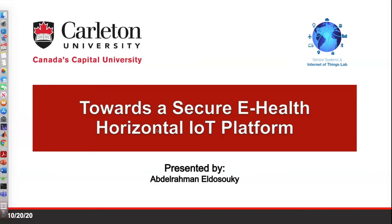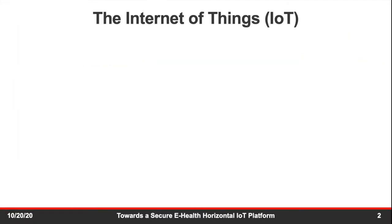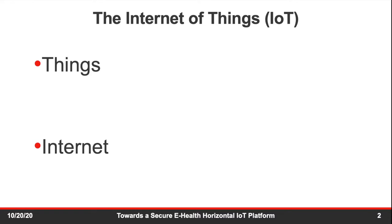I will start with one simple word in my title, which is IoT. What's the IoT? It's simply things and Internet. When we think about things, those are physical objects like sensors, devices, software, or humans — connected to the Internet by means of communication networks, wireless or otherwise.